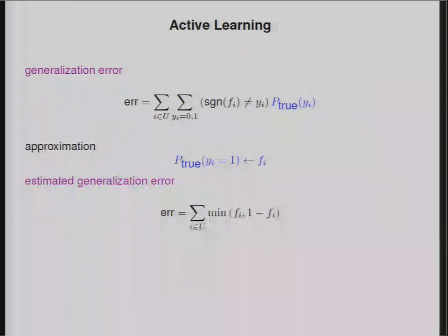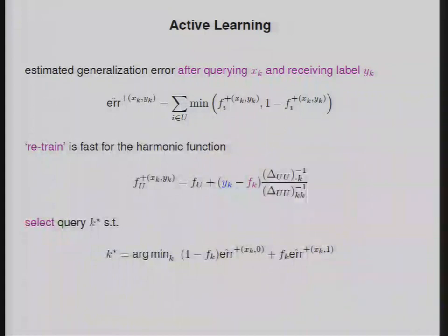This is my generalization error. I want to minimize my expected generalization error. What I don't know is what the true label is. So here's what I'm going to do. I'm going to simply take my current best estimate for the probabilities of the labels. That's given by F. And I'm going to plug that into this equation above. So I plug in Fi as the true probability that Yi equals 1. That is my estimated generalization error. When I plug that into this equation and I simplify a little bit, what I find is that my estimated generalization error is the sum over the unlabeled data of the minimum of Fi comma 1 minus Fi. That's my estimated generalization error.